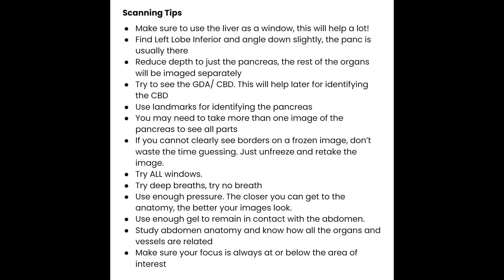Some scanning tips: the biggest one is to really use that liver as a window. Position your transducer above the left lobe of the liver and angle through the liver down towards the patient's feet to image the pancreas — if you think about getting your trans left lobe image, the pancreas is typically right below it and in that picture. Remember to use enough pressure in this area as well — there's a lot of bowel so you want to push that bowel out of the way to get closer to the pancreatic anatomy since it sits a little bit deeper.